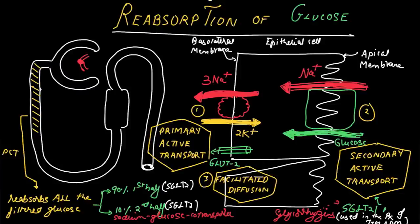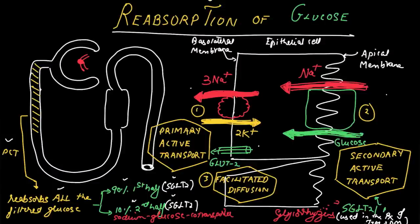To sum up: the proximal tubule reabsorbs all filtered glucose — 90% in the first half by SGLT2 and 10% in the second half by SGLT1. The first step is operation of the basolateral sodium-potassium ATPase pump (primary active transport). Ionic gradients from this drive secondary active transport of glucose on the apical side. Finally, facilitated diffusion via GLUT channels moves glucose across the basolateral membrane. The secondary active transport is inhibited by gliflozins.